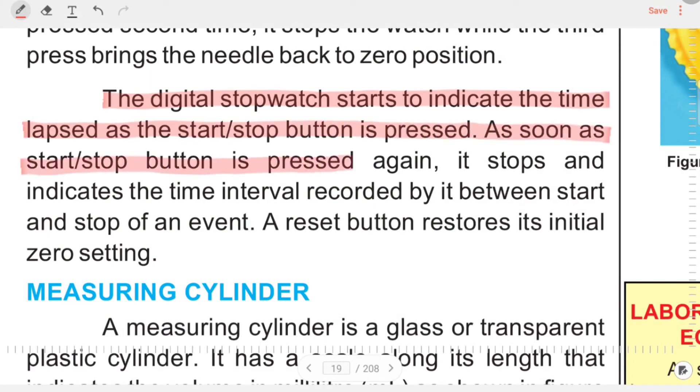The digital stopwatch starts to indicate the time lapsed as soon as the start/stop button is pressed. As soon as the start or stop button is pressed again, it stops and indicates the time interval recorded between start and stop of an event. A reset button restores the initial zero setting.